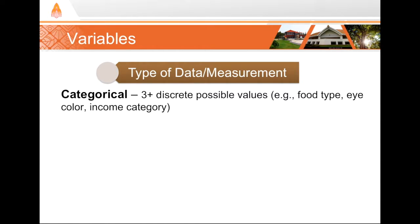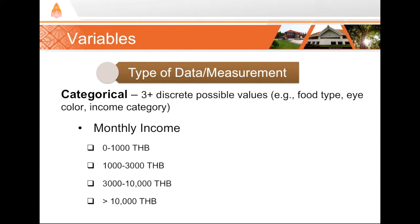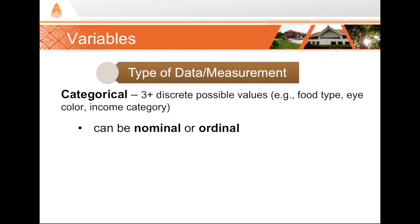Or, if I ask you your monthly income and say you must choose somewhere in the range of 0 to 1,000, 1,000 to 3,000, 3,000 to 10,000, or greater than 10,000 baht, it is a categorical variable.